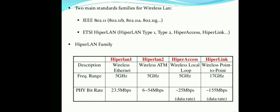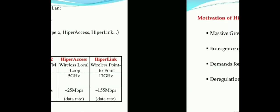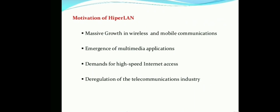Today we are focusing on HiperLAN 1. HiperLAN 1 is used for wireless Ethernet, operates at a frequency range of 5 GHz, and has a physical bit rate of 23.5 Mbps. The motivations behind HiperLAN include massive growth in wireless and mobile communications, emergence of multimedia applications, demands for high-speed Internet access, and deregulation of the telecommunications industry.